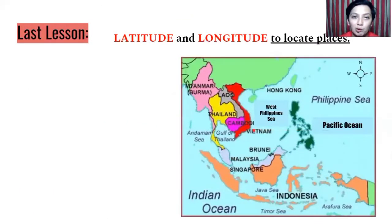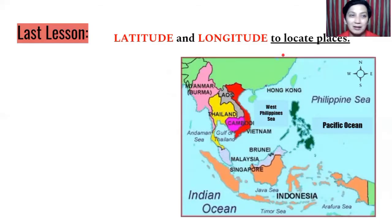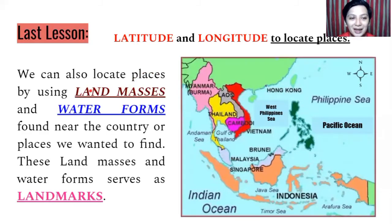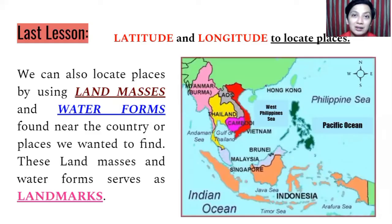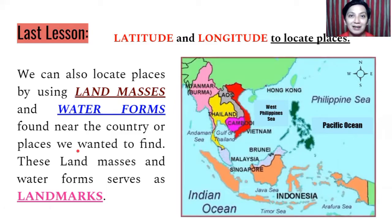Let us have a look back or a review on what we tackled last time. We learned how to use latitude and longitude to locate places — that is one way we can locate places. We can exactly know the place by knowing its latitude and longitude using its coordinates. We also have another way: locating landmasses and water forms near the country. So if we know the landmasses or continents near the country and the water forms — the seas and oceans — those become the landmarks of that particular place.